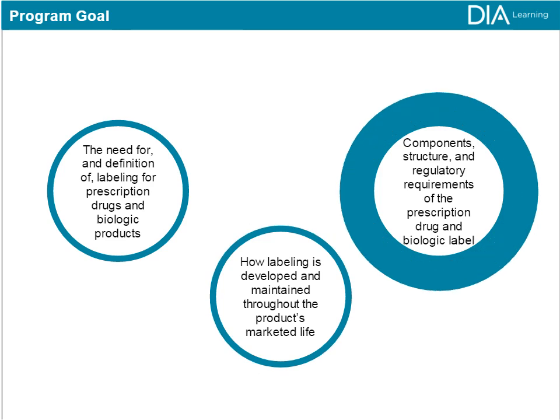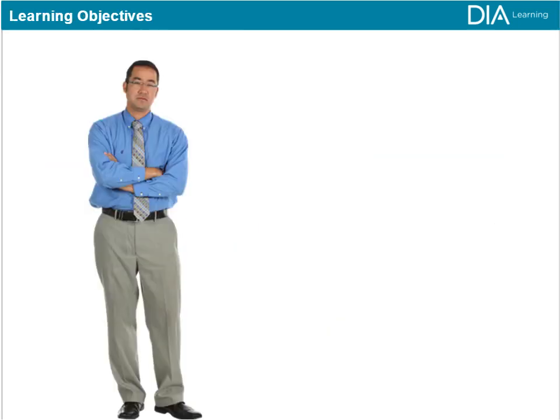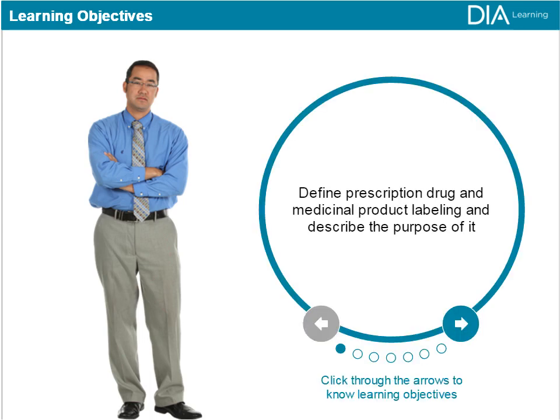The goal of this module is to familiarize individuals with the components and structure of the prescription drug and biological product labeling and pertinent regulatory and legal requirements with which they must comply. Upon completion of this module, learners should be able to define prescription drug and medicinal product labeling and describe the purpose of it.